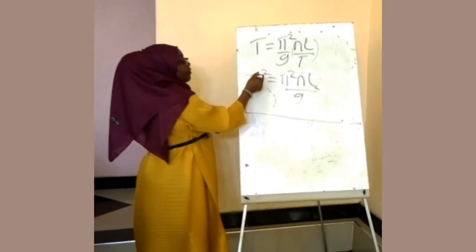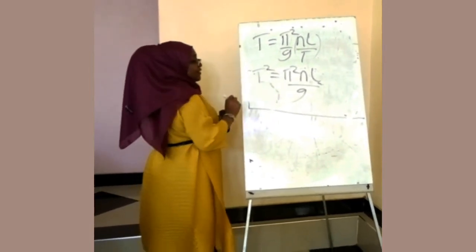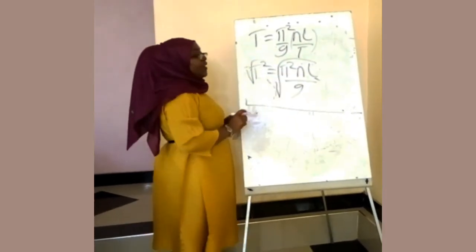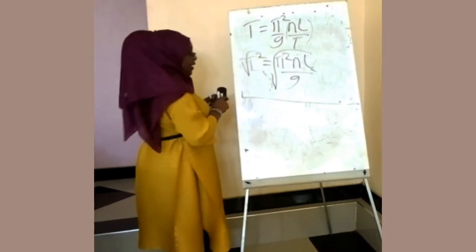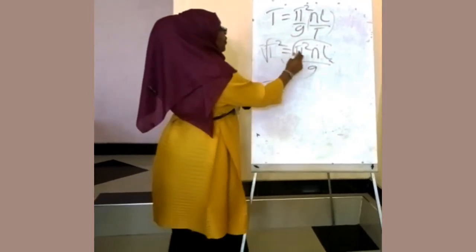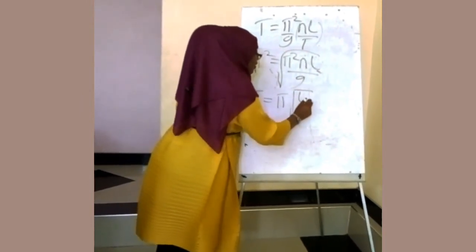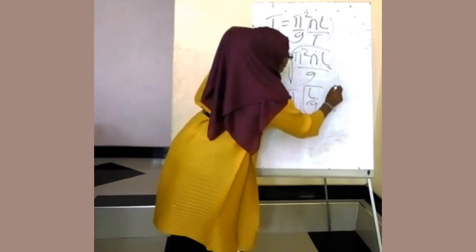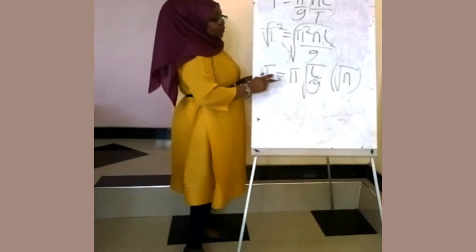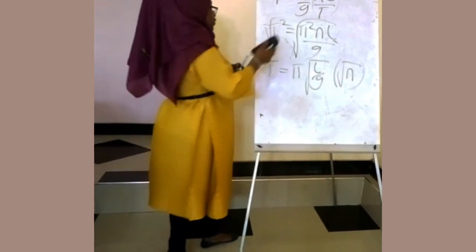So if we remove the square on T by taking the square root of both sides, the under root of T² equals the under root of π² L L over G. Therefore T is equal to π times √(L/G) multiplied by √N. So this is the periodic time. To write the general formula for the Galileo experiment, it could be...